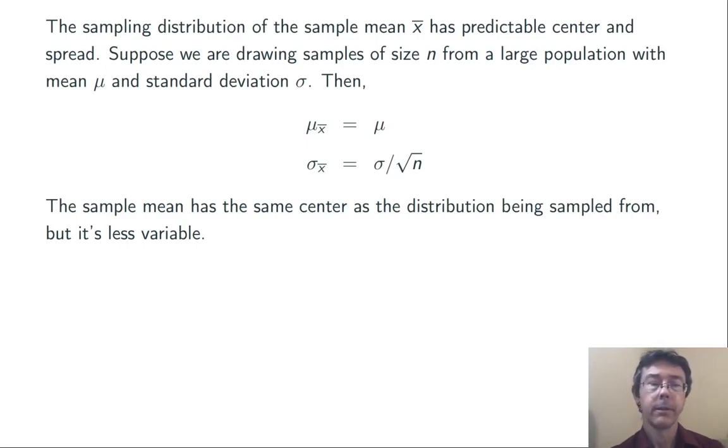One technical note here. Technically, these equalities are true when the sampling is done with replacement, when it is possible to draw the same person or object from the population multiple times in a single sample.